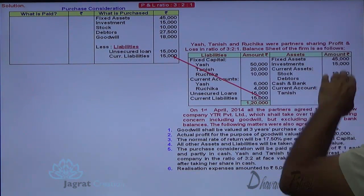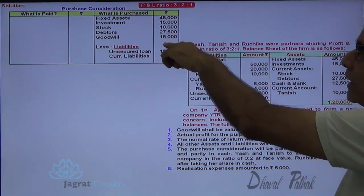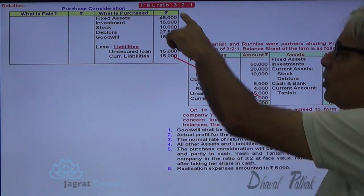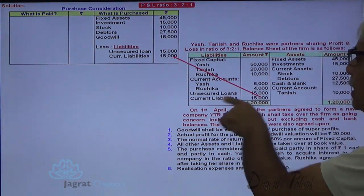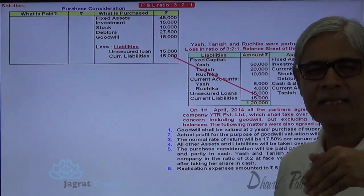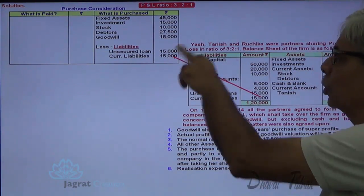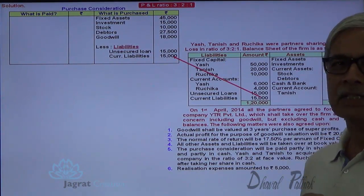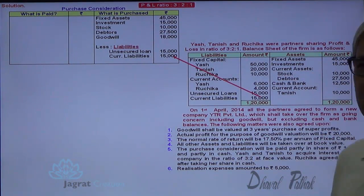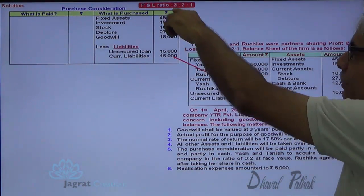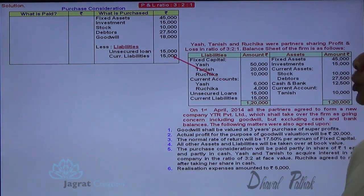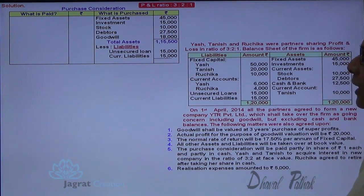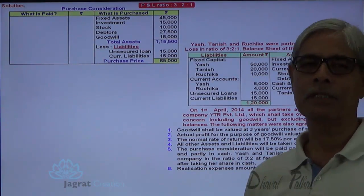I am preparing the purchase consideration statement. All assets are taken at book value, except goodwill which is valued at 18,000. This gives the total value of assets. These are the liabilities, since all assets and liabilities are transferred at book value. So total value of assets is 1,15,500 minus liabilities of 30,000, giving a purchase price of 85,500.